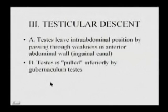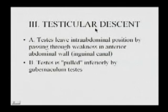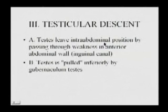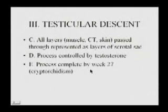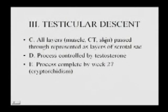Testicular descent must occur in the male; the ovaries also descend but not all the way into the labia majora. The testes leave the intra-abdominal position by passing through a weakness in the anterior abdominal wall — the inguinal canal — just lateral to the pubic bone. The testes are pulled inferiorly guided by the gubernaculum testis, which is homologous to the ovarian ligament and round ligament of the uterus in the female. All layers of muscle and connective tissue pass through and become layers of the scrotal sac.